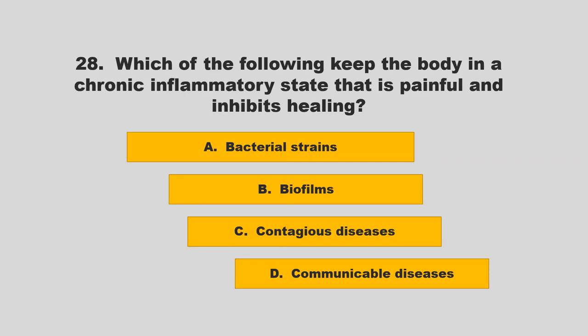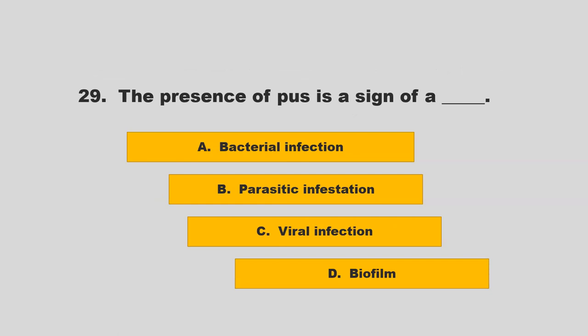Which of the following keep the body in a chronic inflammatory state that is painful and inhibits healing? Options: bacterial strains, biofilms, contagious diseases, or communicable diseases. The correct answer is B: biofilms.